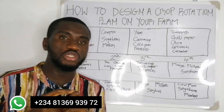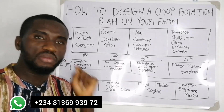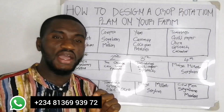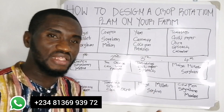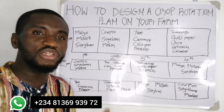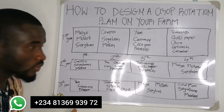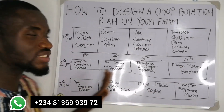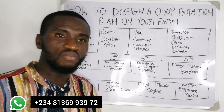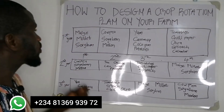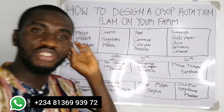Another principle of crop rotation is that in the sequence or in the cycle, you must have a leguminous crop. The idea behind this is that leguminous crops are nitrogen-fixing plants — they tend to improve the nutrients and fertility of the soil, and they also help in preventing soil erosion. Cassava or yam help in improving your soil structure and soil hydration, while cowpea or soya bean help in fixing nitrogen into your soil.